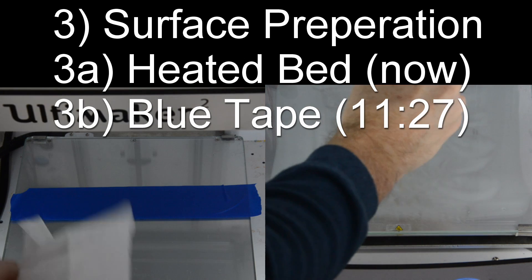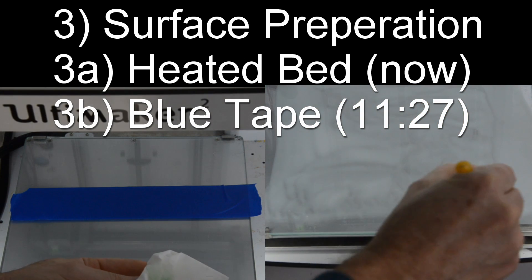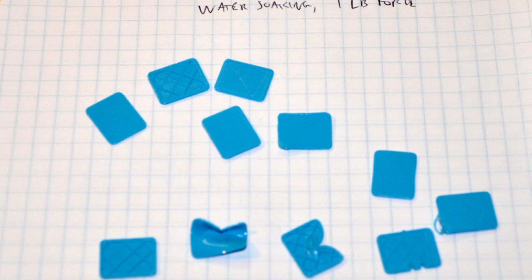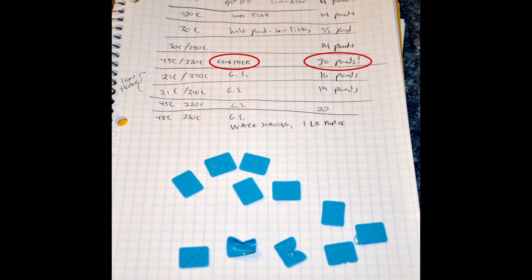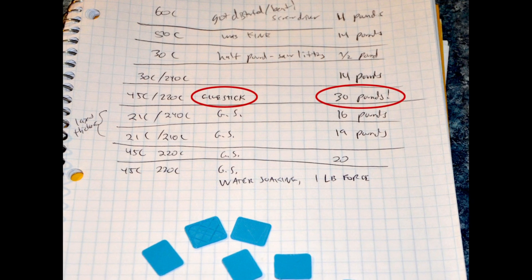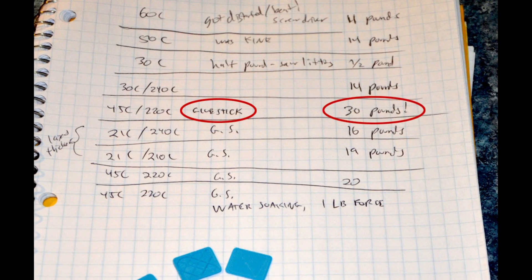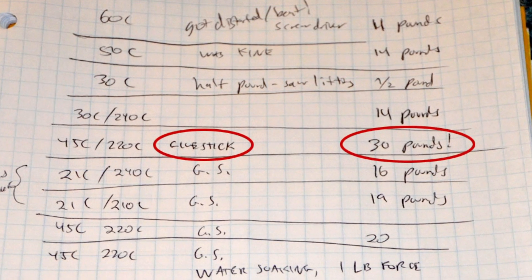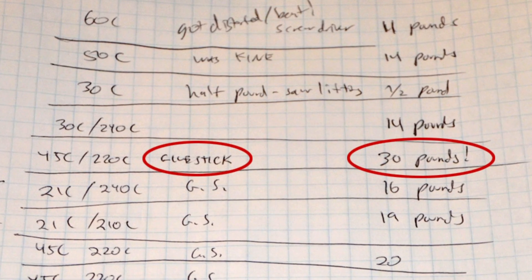Surface Preparation. If you don't have a heated bed, skip to the blue tape section. If you have a heated bed with glass, it's usually fine without any glue. But adding a very thin layer of glue makes a big difference. I did an experiment where I measured the force to remove a part from glass at varying temperatures, and with and without glue. And the glue required twice the force to get the part off the bed. Details of my experiment are in the description below.